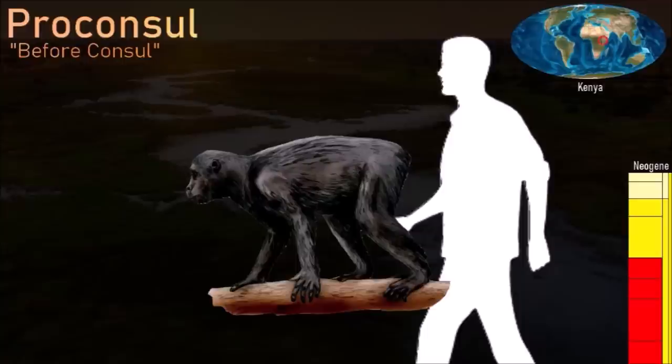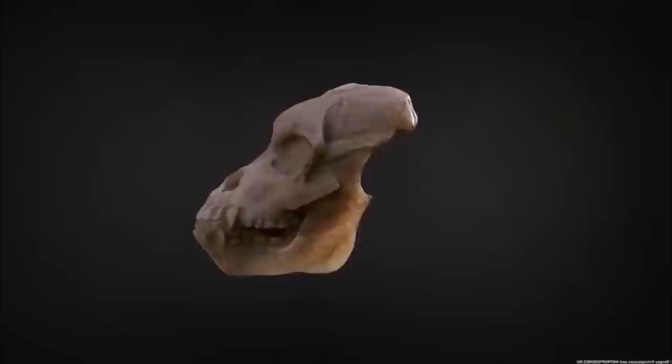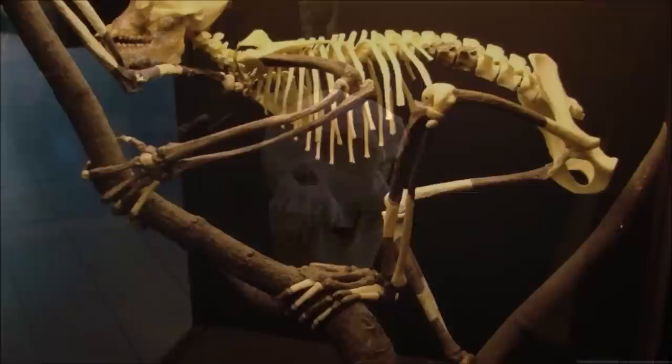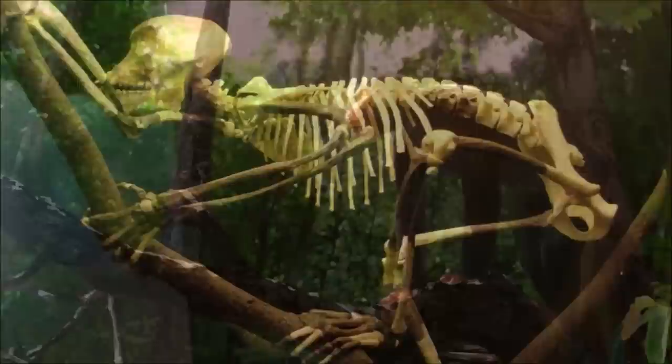Proconsul was the size of a modern baboon or gibbon and was the first fossil anthropoid to be found in Africa. It was positioned close to where the old world monkeys and apes split apart on the primate family tree. Like old world monkeys, Proconsul had thin tooth enamel, a narrow chest, short forelimbs, and a light build, indicating that it was primarily a tree dweller living on soft fruits. However, it also shared some similarities with apes, having a large brain, ape-like elbows, and no tail.